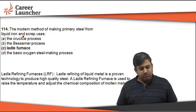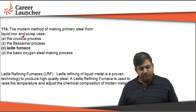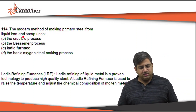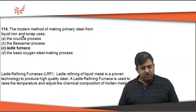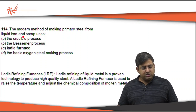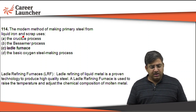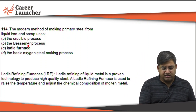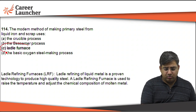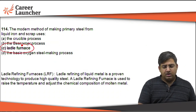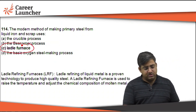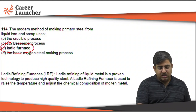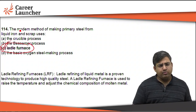The next question: the modern method of making steel from liquid iron and scrap uses which process? It is basically the ladle furnace. The modern method uses the ladle furnace. The right answer is C.